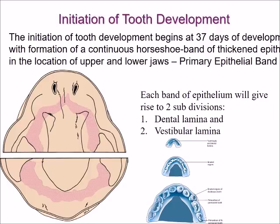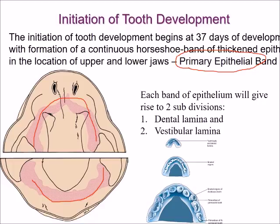Tooth development starts at the age of six weeks intrauterine life by the appearance of the primary epithelial band. This is a thickening in the ectoderm at the sites where the future teeth will appear in both the lower jaw and the upper jaw. In the seventh week, the primary epithelial band divides into two laminae: the dental lamina, which will produce the teeth, and the vestibular lamina, which will produce the vestibules between the tooth-bearing areas and the cheeks or lips.